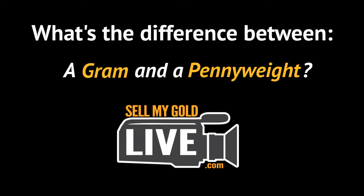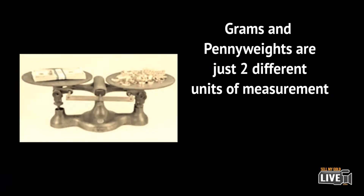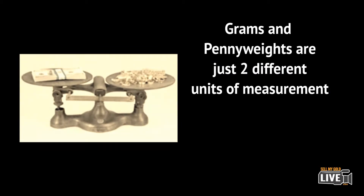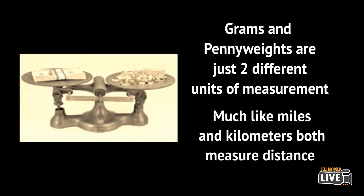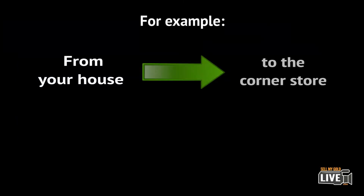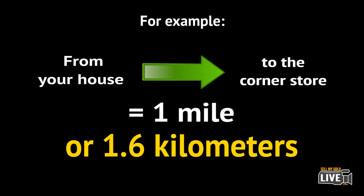What is the difference between a gram and a penny weight? Grams and penny weights are just two different measurements of weight, in the same way that miles and kilometers measure distance. For instance, the distance from your home to the corner store might be one mile — you could also say it's 1.6 kilometers.